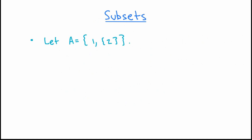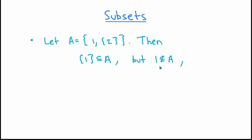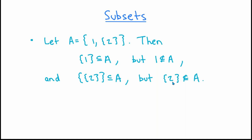One more example: let A be the set whose elements are the number 1 and the set containing 2. Then the set containing 1 is a subset of A, because the only element of that set is the number 1, and 1 is an element of A. On the other hand, the number 1 itself is not a subset of A — the number 1 is an element of A, but by itself it's not even a set, and for something to be a subset of something else, both things have to actually be sets. Also, the set containing the set containing 2 is a subset of A, but the set containing 2 itself is not a subset of A.